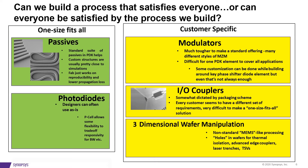Can we build a process that satisfies everyone? From lots of tapeouts on the silicon photonics side, I've found that passives are probably good enough to get started, and customization of passive devices can be done in a pretty straightforward way. Photodiodes are also usually pretty good off the shelf. But modulators are very difficult — it's very hard to make one modulator that is good enough for every application, and designers tend to spend a good deal of their time on modulator design.